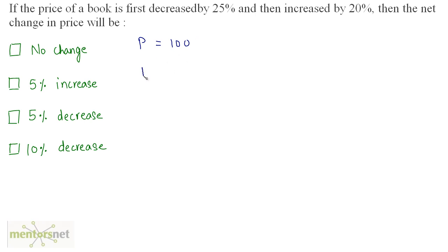The new price after decreasing by 25% is equal to 100 minus 25% of 100, which is basically 100 minus 25, that is 75 rupees.